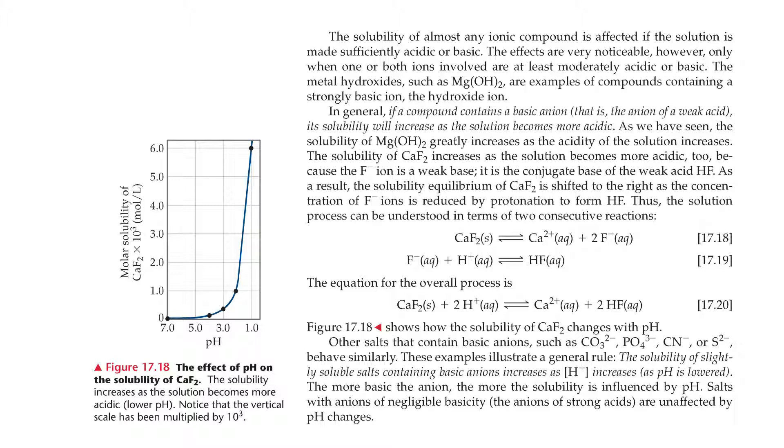Figure 17.18 shows how the solubility of calcium fluoride changes with pH. Other salts that contain basic anions, such as carbonate, phosphate, cyanide, or sulfide, behave similarly. These examples illustrate a general rule: The solubility of slightly soluble salts containing basic anions increases as the concentration of hydrogen ion increases, or as the pH is lowered. The more basic the anion, the more the solubility is influenced by pH. Salts with anions of negligible basicity, the anions of strong acids, are unaffected by pH changes.